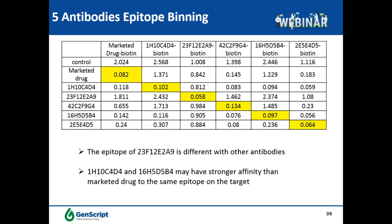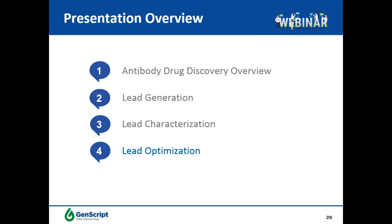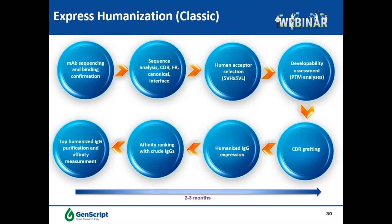After a functional, highly specific lead is generated, the next step is lead optimization. Due to the high immunogenicity of murine and chimeric antibodies, humanization is required for rodent leads. Antibody humanization is the process of replacing non-human antibody frameworks with human ones. Successful humanization depends on maintaining affinity after replacing residues. In general, there are two kinds of humanization strategies: CDR grafting, which does not change human germline, and germline shuffling, which changes human germline.